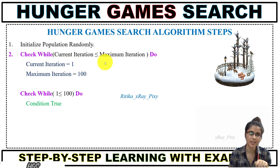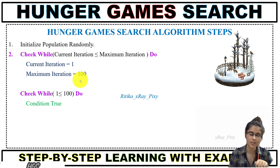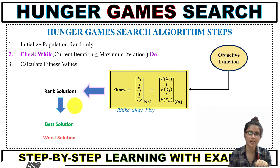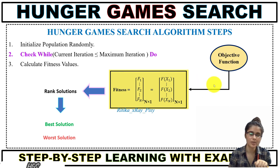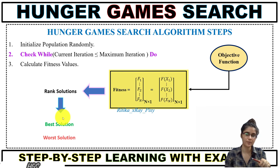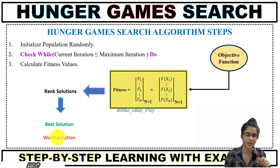Next, we check the stopping condition: whether the current iteration is less than or equal to the maximum iteration. For example, with current iteration 1 and maximum iteration 1000, this condition is true — move to the next step. Now we calculate the fitness value for each agent by applying the objective function on the initial population. The best solution has the minimum fitness value and the worst solution has the maximum fitness value.